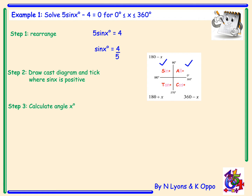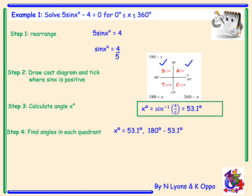Next we calculate the angle x by doing inverse sine of four fifths using a calculator, which gives 53.1 degrees. That 53.1 degrees is the angle in the first quadrant. The angle in the second quadrant is obtained by doing 180 minus 53.1. So our final solution for x is 53.1 degrees and 126.9 degrees.